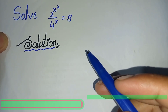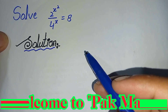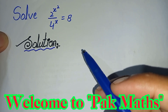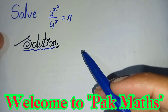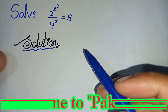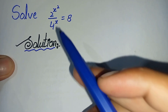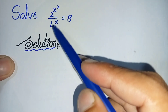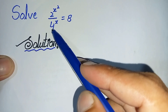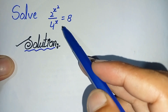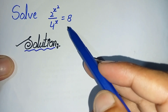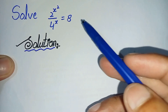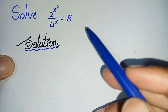Hi everyone, welcome to Parkmas. In this video I am going to solve this exponential math problem: 2 raised to the power x squared divided by 2 raised to power x is equal to 8. So let's start the video.